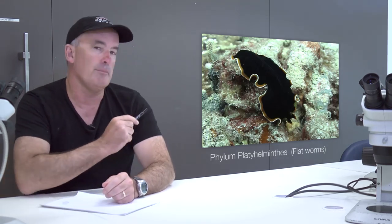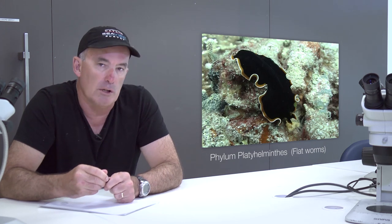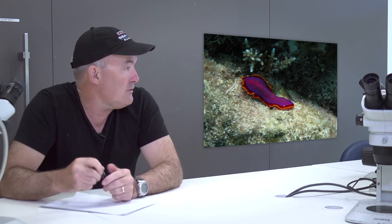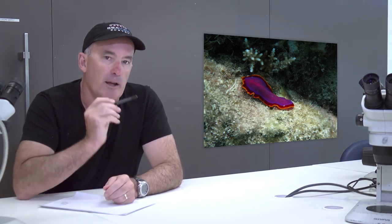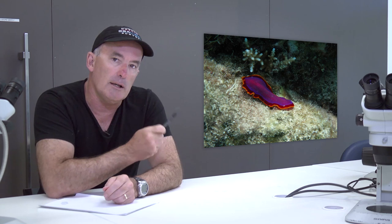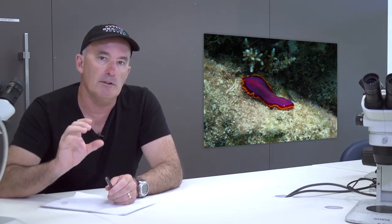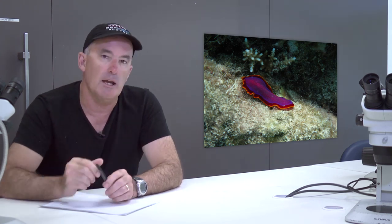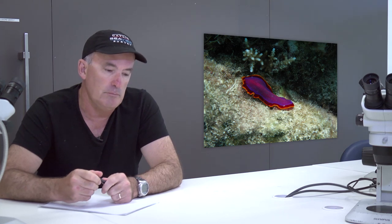The first group of worms we'll consider are the flatworms, or animals belonging to the phylum Platyhelminthes. Like cnidarians, flatworms have a simple sac for a gut and no specialized respiratory or circulatory systems. Some flatworms are parasitic while others are active predators on the reef. Many flatworms are also brightly colored, advertising their distastefulness to predators such as fish, as many of these flatworms have toxic compounds in their tissues.